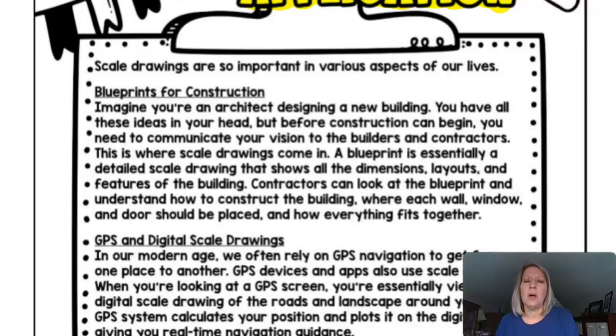For blueprints and construction, if you're an architect designing a new building, you have everything in your mind as far as what you want to construct or create. You need to communicate those visions to your builders and contractors, and that's where scale drawings come in. A blueprint is essentially a detailed scale drawing that shows the dimensions, layouts, and features of the building. Contractors will be looking at that blueprint and trying to understand what you're looking to design and construct: where each wall, window, door, and other structural things are going to be placed, and what size and shape they should be and how everything fits together.